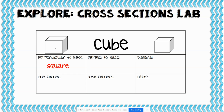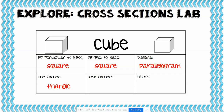When you cut it parallel to its base, you should also get a square. When you cut a diagonal, you don't actually get a perfect square — you get a parallelogram. If you cut off one corner of a cube, you're going to get a triangle.